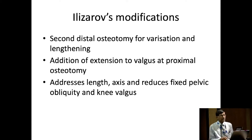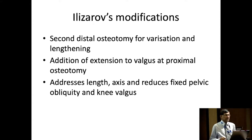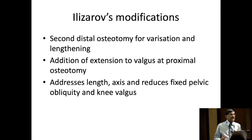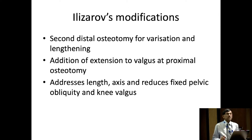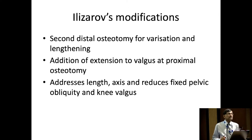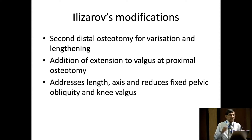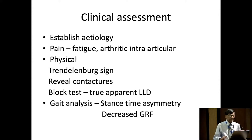So what did Ilizarov do? He modified it. He added a second distal osteotomy for valgization and lengthening. He added extension to valgus for the simple reason that when you walk in stance, the leg has to lock — or the hip has to lock — otherwise you buckle. So if you don't give that extension, your gait will again look ungainly. It also addressed length, axis, and reduced the fixed pelvic obliquity and knee valgus.